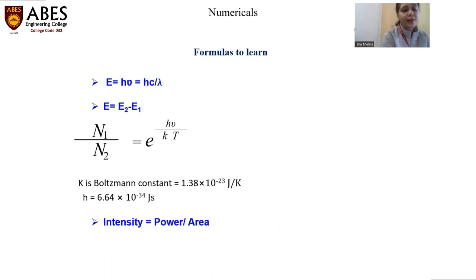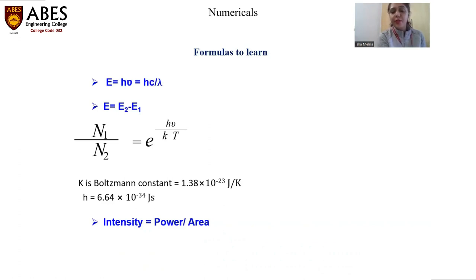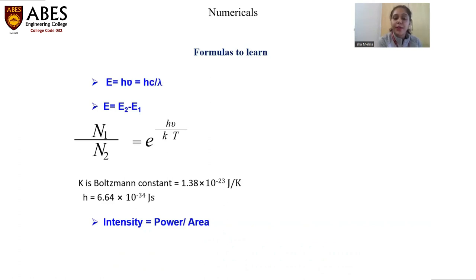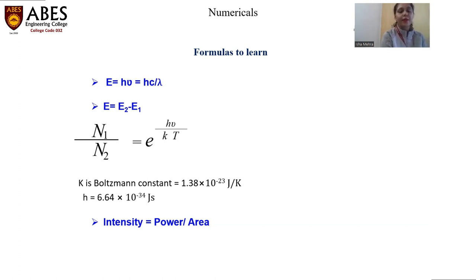Here are a few formulas to know for competitive exams and numericals related to laser. The energy formula is E = hν = hc/λ. The Boltzmann distribution law gives N1/N2 = e^(hν/kT), where k is the Boltzmann constant and h is 6.64 × 10⁻³⁴ joule-seconds. The formula for intensity is power divided by area. We will be doing some numericals related to these in the coming presentations.